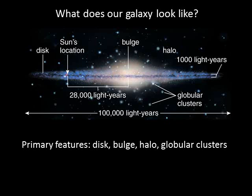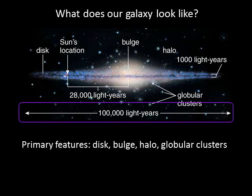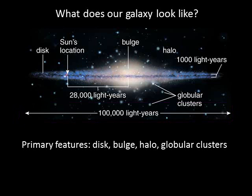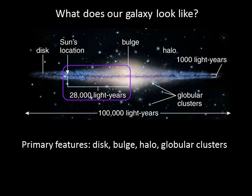The entire galaxy is about 100,000 light years in diameter, and the disk is about 1,000 light years thick. Our sun is located in the disk about 28,000 light years from the galactic center.